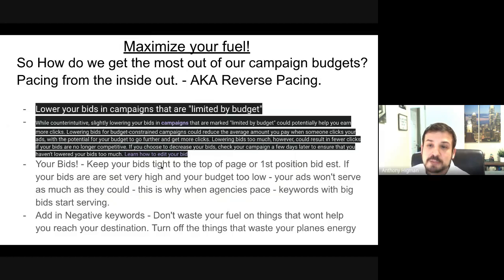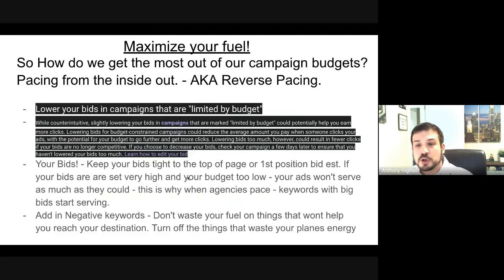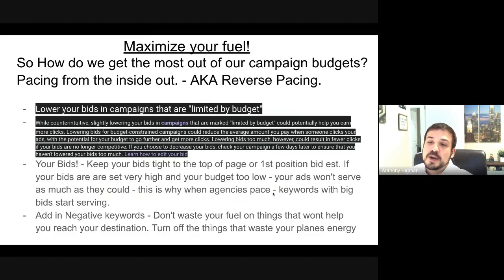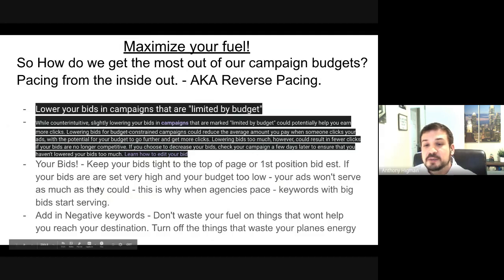This is why I always try to drive home: we want to keep our bids tight to the top of page or first position bid estimate. If I have bids set to 200 across the board and a 50 dollar a day budget, it's not going to work out. We don't want to set our cost per click bid super high with a low budget — our ads won't serve as much as they could. When agencies pace keywords with super high cost per click bids, they start serving but then when the budget comes back down they cut off.